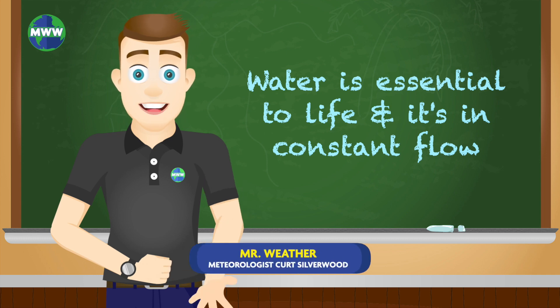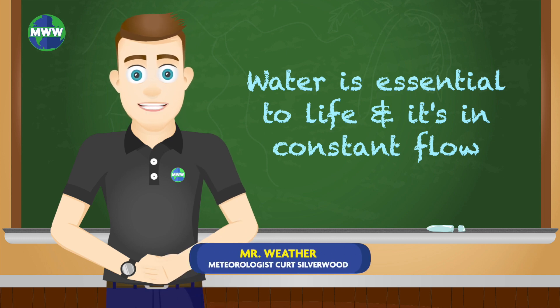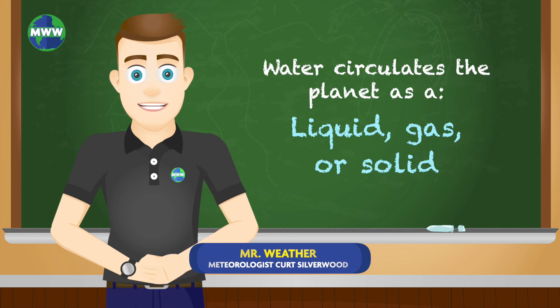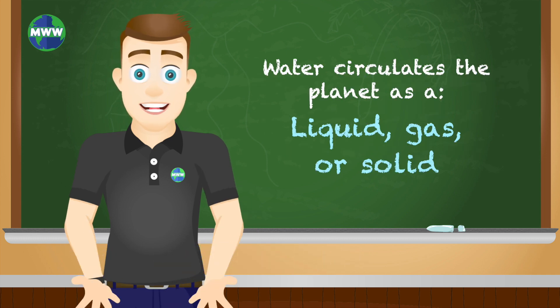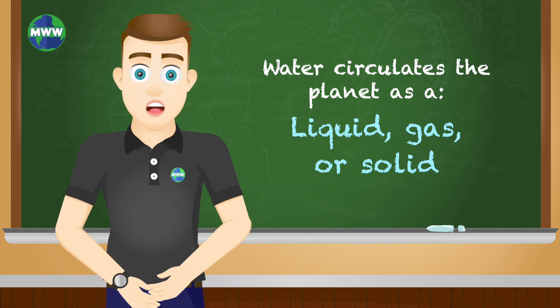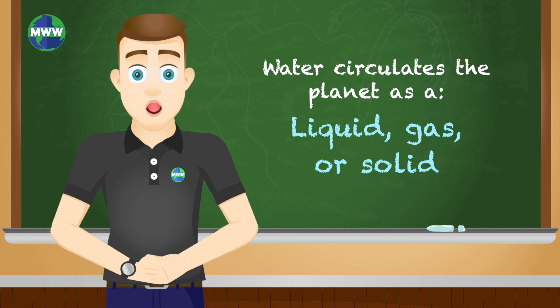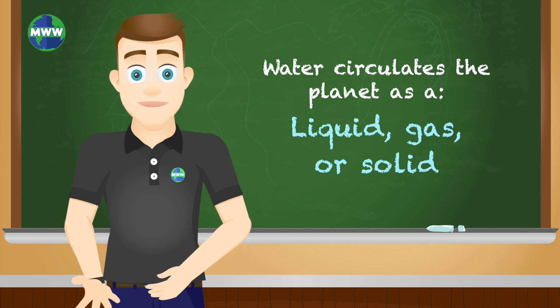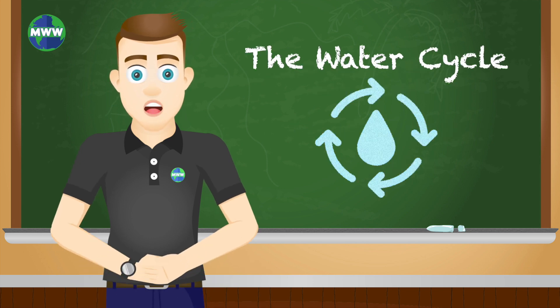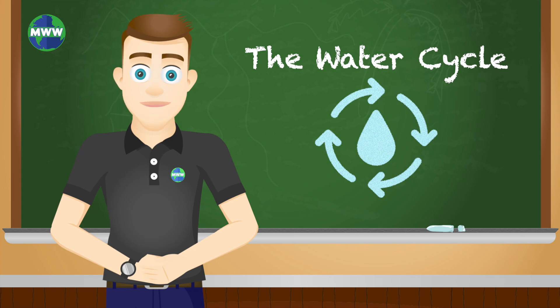Water is essential to life and it's in constant flow. It's always circulating the planet in each of its states — a liquid, gas, or solid. This movement is called the water cycle.